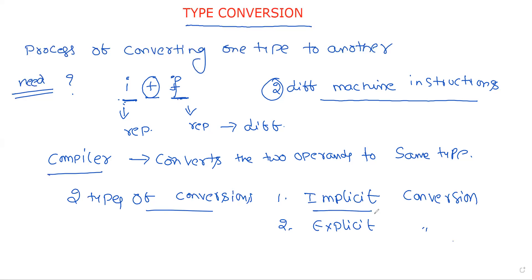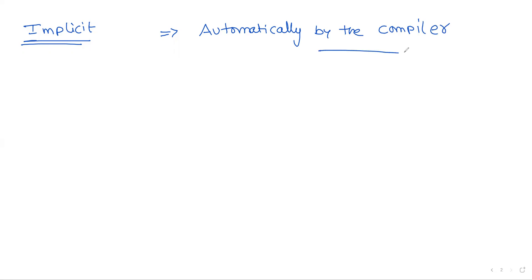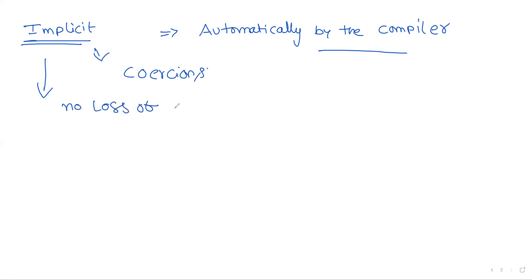Implicit conversion means the conversion done automatically by the compiler. When conversion is done automatically by the compiler, it is called implicit conversion. Another name for implicit conversion is coercion.